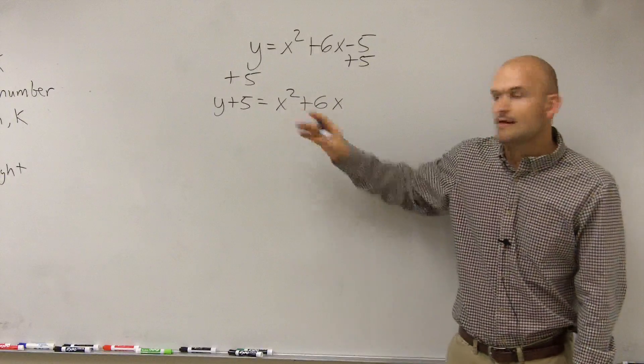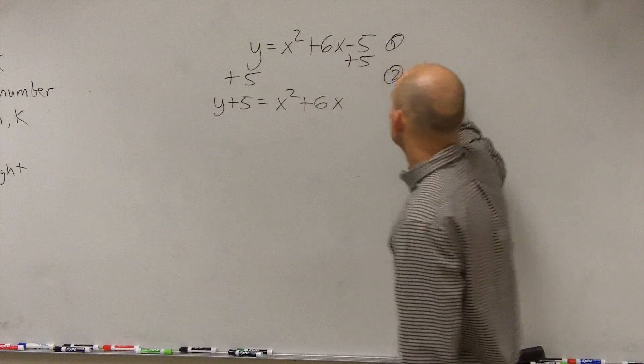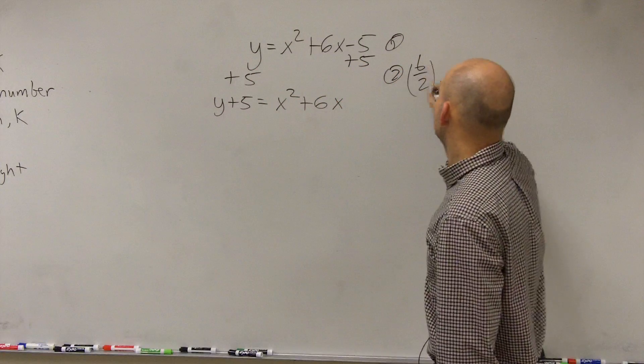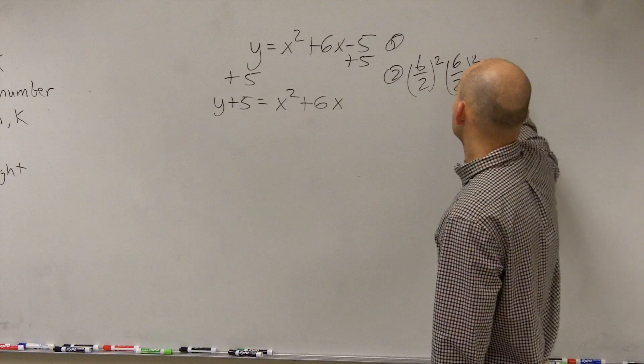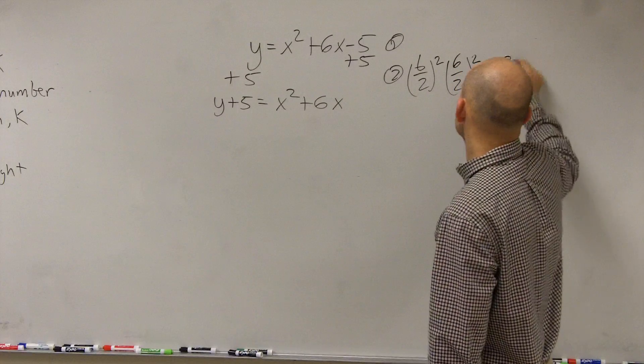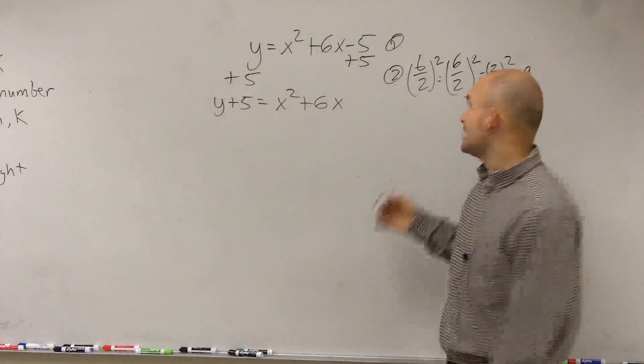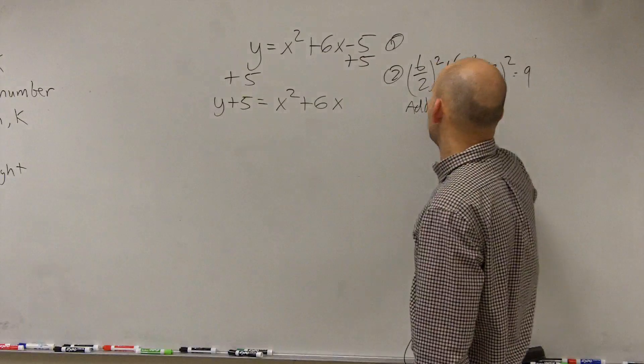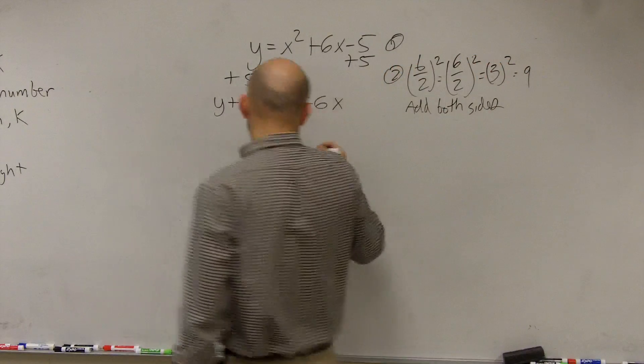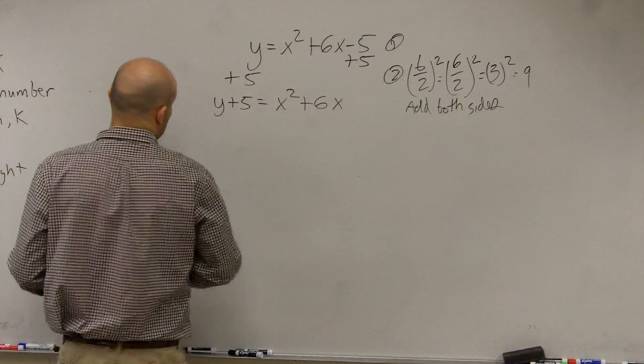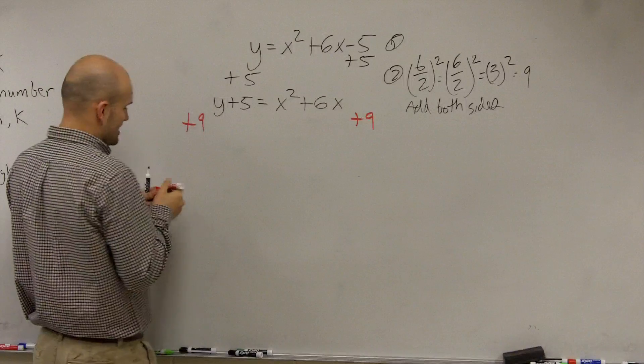Then, step number 2, b divided by 2, square it. So therefore, we have 6 divided by 2 squared equals 3 squared, which equals 9, right? And then we add that to both sides. So add to both sides. So with using proper language, we will add that 9 to both sides.